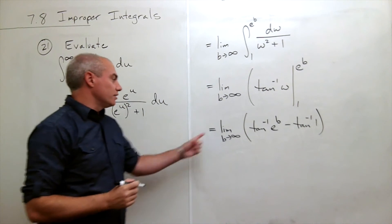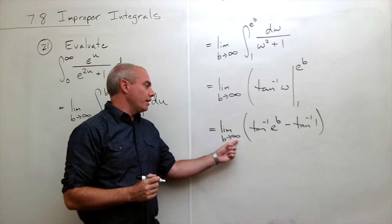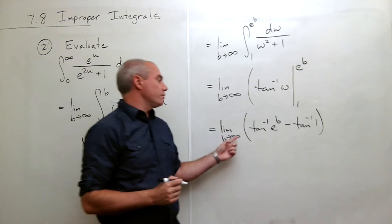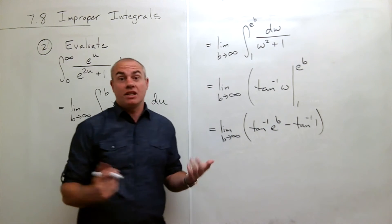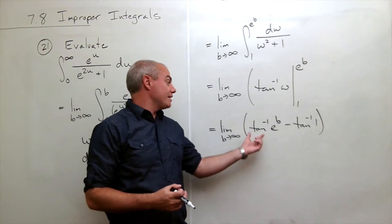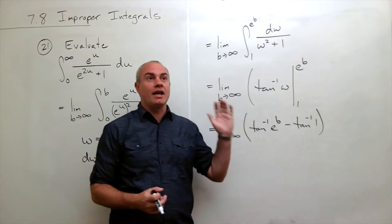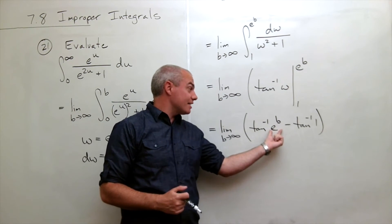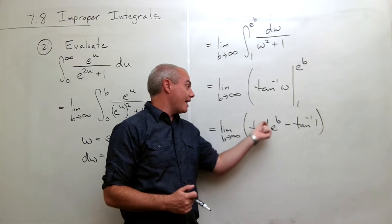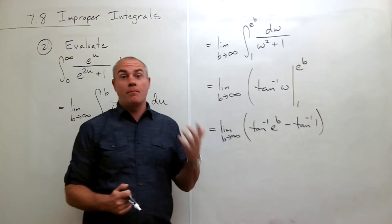Now we're ready to take the limit as b goes to infinity. I take the limit as b goes to infinity, e to the infinity is infinity. Okay, and tan inverse of infinity, as x gets bigger and bigger tan inverse goes towards pi over 2.